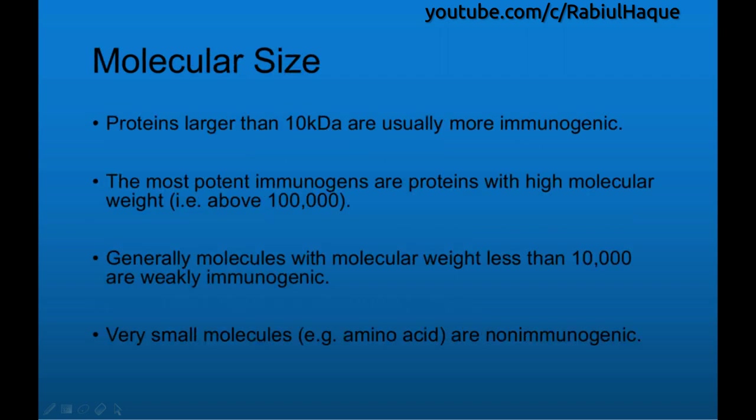The next feature is regarding molecular size. Proteins larger than 10,000 dalton or 10 kilodalton are usually more immunogenic. The most potent immunogens are proteins with high molecular weight. Generally, molecules with molecular weight less than 10,000 are weakly immunogenic. Very small molecules, for example amino acids, are non-immunogenic.